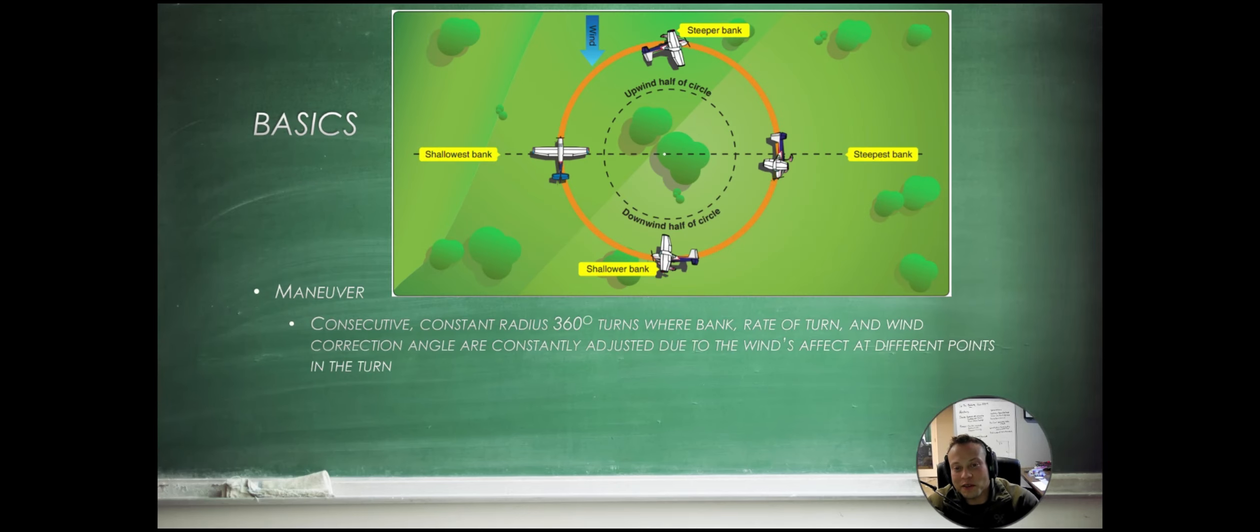This is what it looks like. Like if this is our reference point here, our little tree, we're going to enter on the downwind right here, enter a steep turn, and again, the entire time we're dealing with changing wind direction and bank angle.